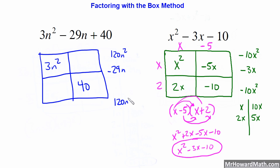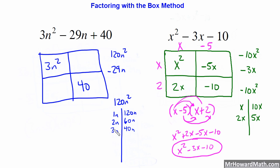We write 120N squared and work out the factors, worrying about signs once we place them in the boxes. We could have 1N and 120N — that's 121N or 119N, so that won't work. Next, 2N and 60N — that gives 62N or 58N, not it. Then 3N and 40N — that's 43N or 37N. Then 4N and 30N — that's 34 or 26, getting closer. Next, 5N and 24N — together that's 29N or 19N, and the 29N is what we need.